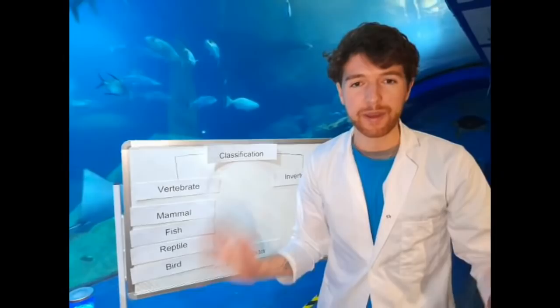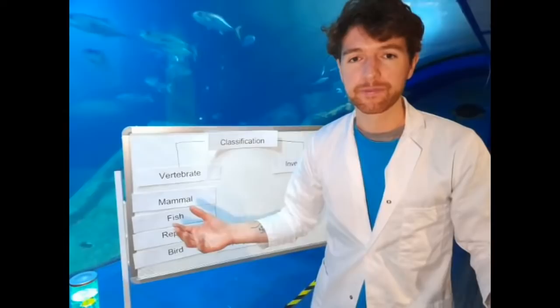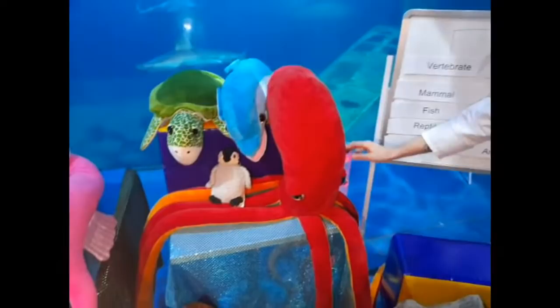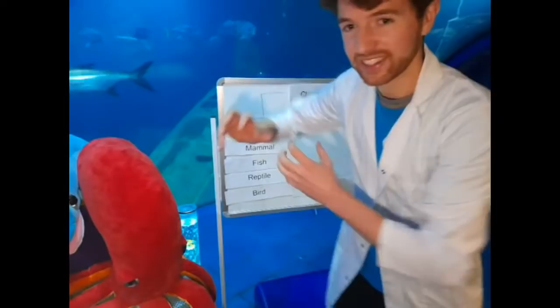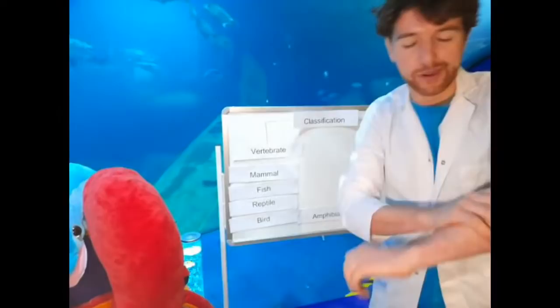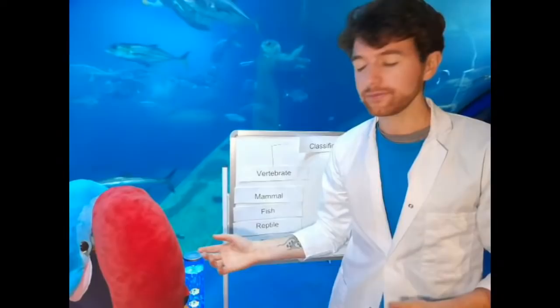Invertebrates are animals which don't have a backbone. And there are loads of them — there are thousands, there are millions of invertebrates. One of my favourites is this great big octopus. And this octopus here has no bones to hold it up — it's all soft and squishy. And because of that it can squeeze into small places and doesn't have to worry about its bones getting in the way.